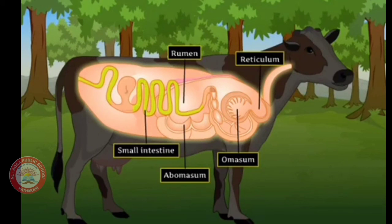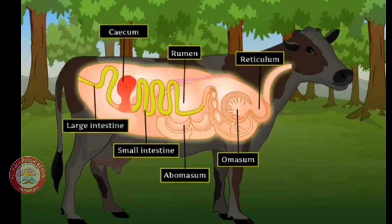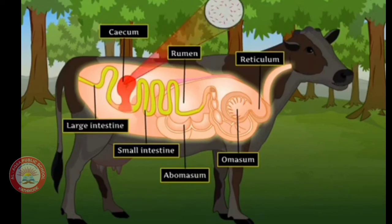A large sac-like structure called the cecum, present between the small intestine and the large intestine, contains bacteria that help in the digestion of cellulose — a carbohydrate present in grass. So now you know why cattle keep chewing all the time.